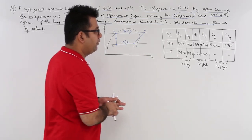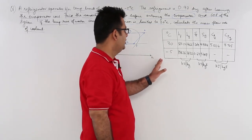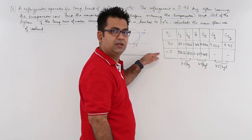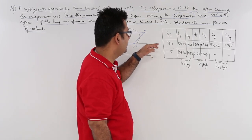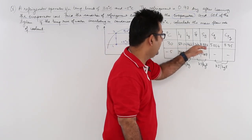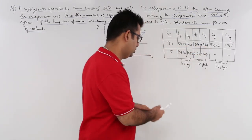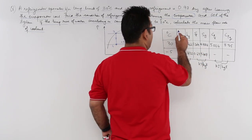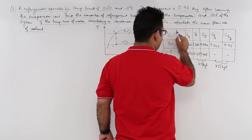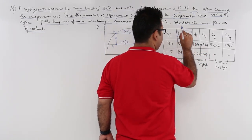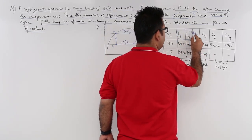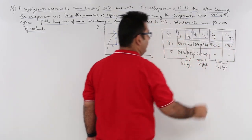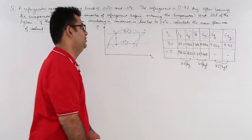The property table is given with two temperature limits: minus 5 and 30 degrees Celsius. This includes the enthalpy table, the entropy table, and the specific heat capacity tables.